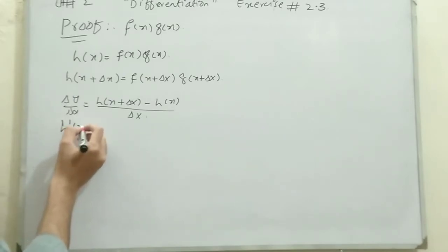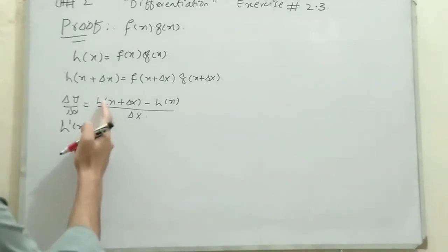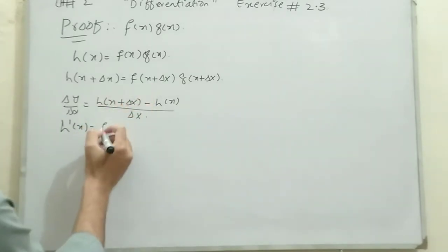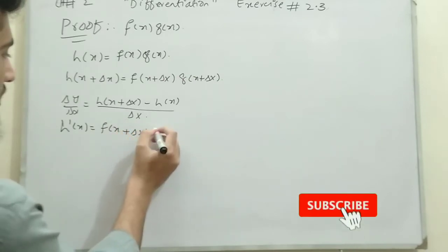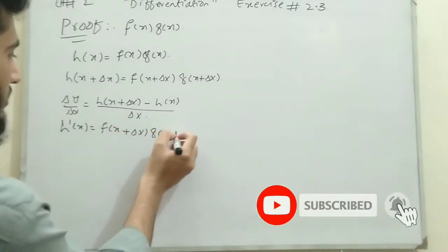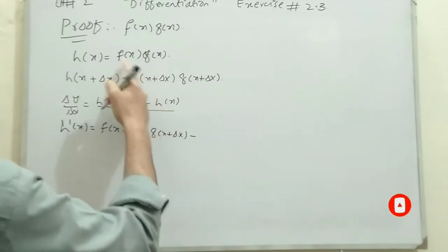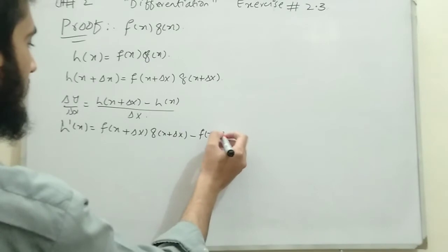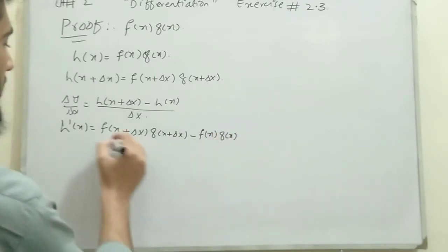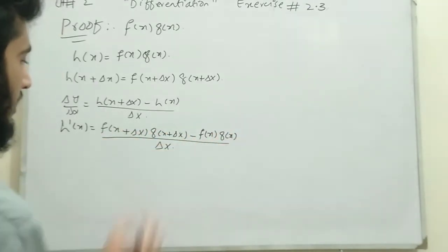So h'(x) is the representation of the differentiation of h(x). Substituting, we get h'(x) = [f(x + Δx) · g(x + Δx) - f(x) · g(x)] / Δx.